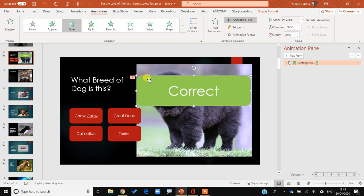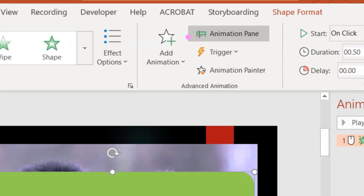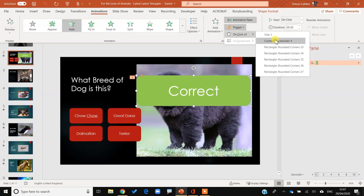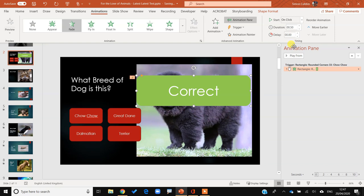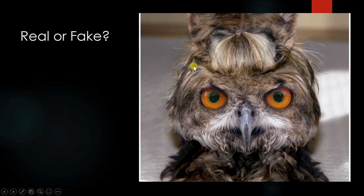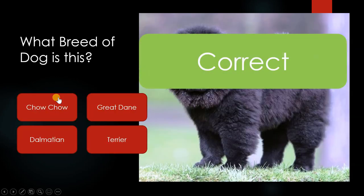So I click on 'correct' and under the Animations section there's a nice section called Trigger. I click on Triggers, then 'On Click of', and I can choose my rectangle — in this case 'Rounded Rectangle 33'. Then with Shift+F5 to run: if I click anywhere it just moves to the next slide, but if I click on Chow Chow specifically, you can see it comes up 'correct'. Looking good.